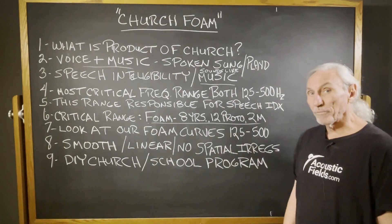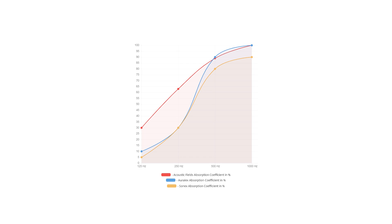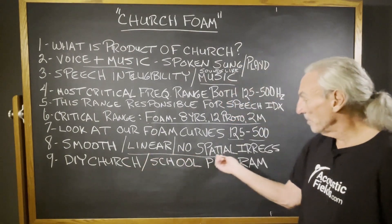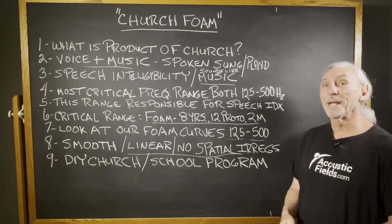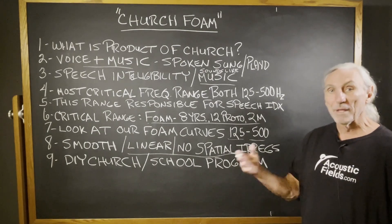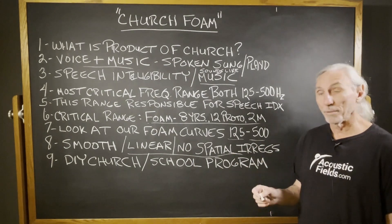Let's look at our foam curves in the 125 to 500 cycle region. This graphic compares our foam to Oralex and Sonix, which were the two leading foam companies in the business at the time. You can see a big difference in the 125 to 500 cycle range — ours is smooth and linear, with no spatial irregularities and no dropouts. The Sonix and Oralex have big dropouts at two-inch thicknesses. That smooth, linear curve — no peaks or troughs — gives us great performance and earns the label 'organic,' meaning natural, not overabsorbed, not underabsorbed, just taking enough off to minimize reflections and lower reverberation times.